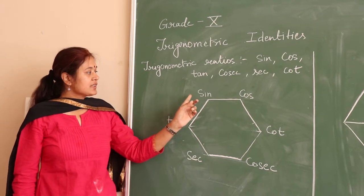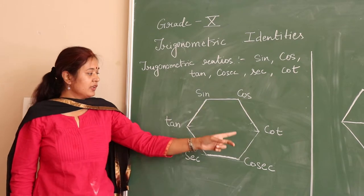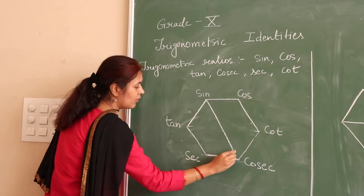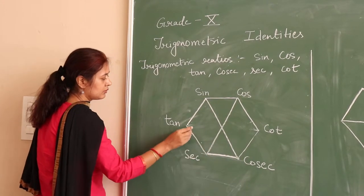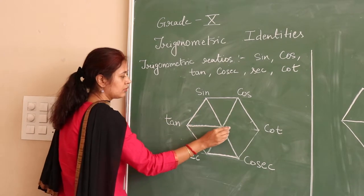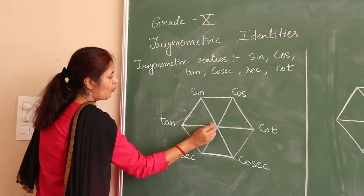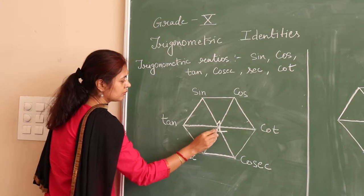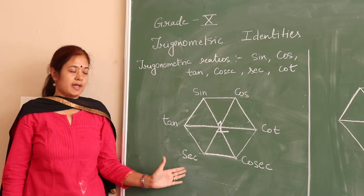So we have six trigonometric ratios which I put on the vertices. Now I join all the opposite vertices and place one in the middle. So this hexagon is known as super hexagon.